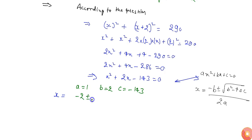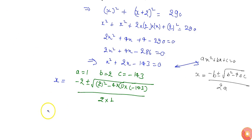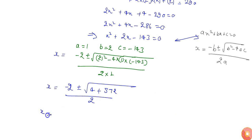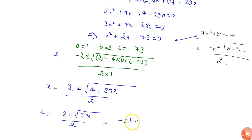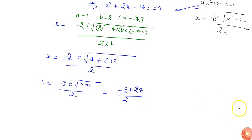Using the formula, x equals minus 2 plus or minus square root of 2 squared minus 4 times 1 times minus 143, divided by 2 times 1. This gives minus 2 plus or minus square root of 4 plus 572, which is square root of 576. The square root of 576 is 24, so x equals minus 2 plus or minus 24, divided by 2.